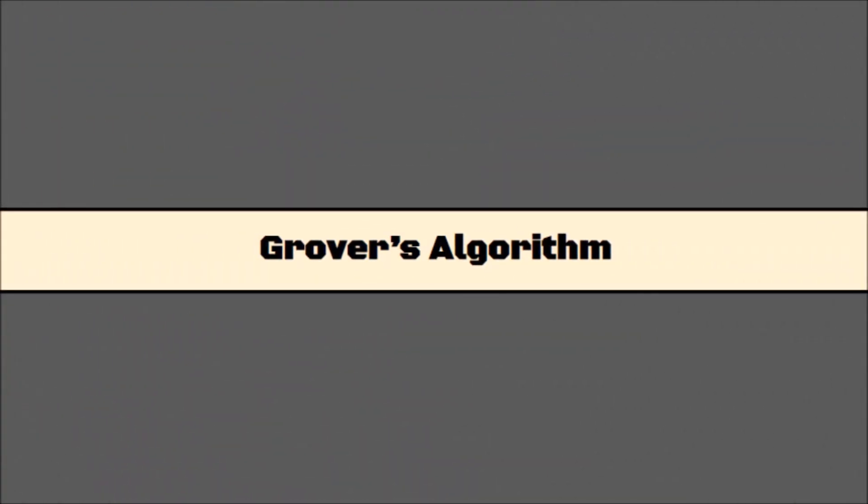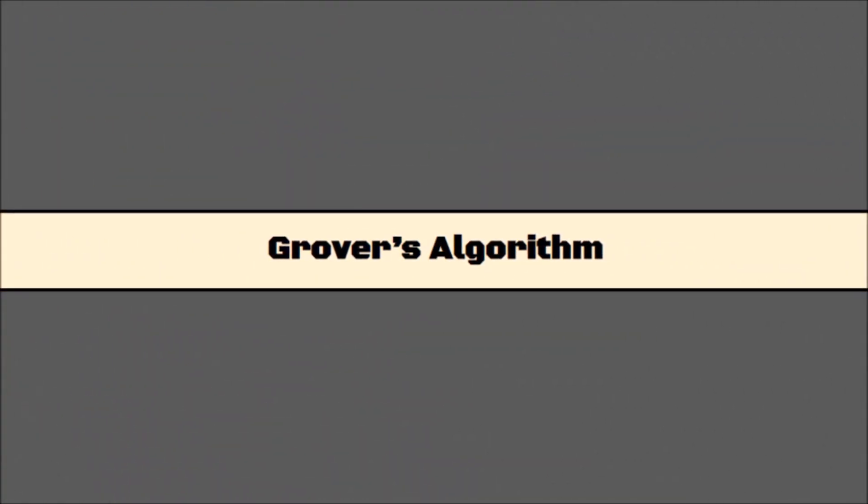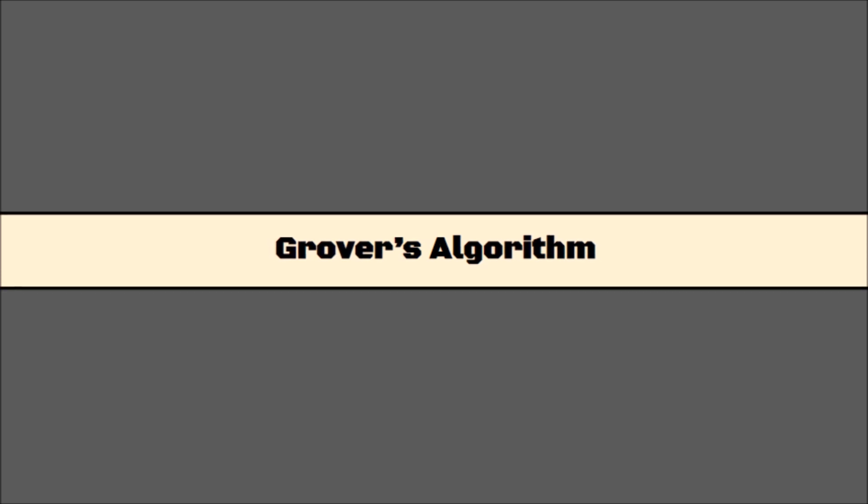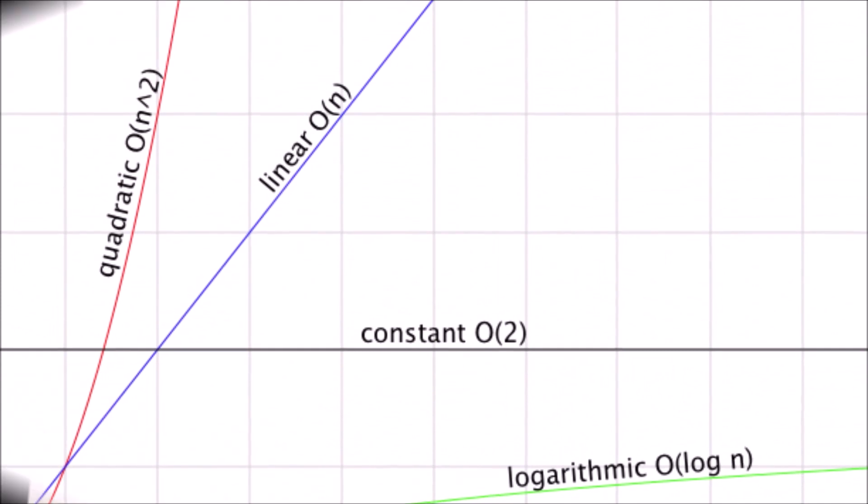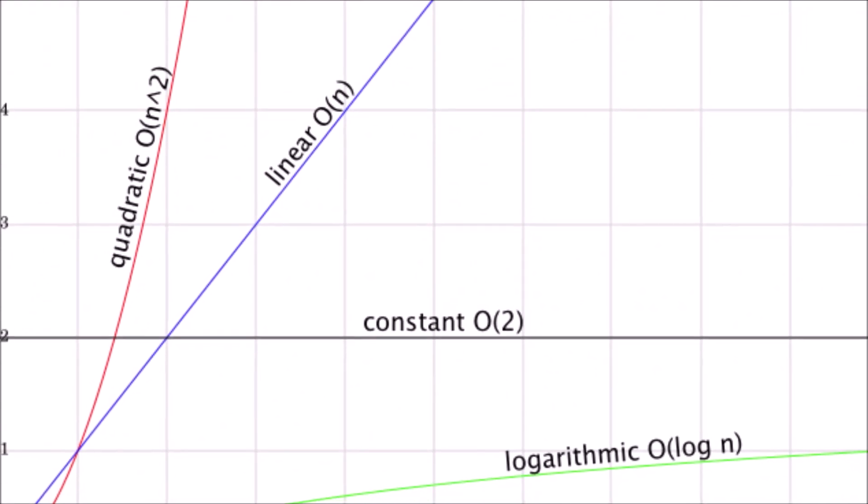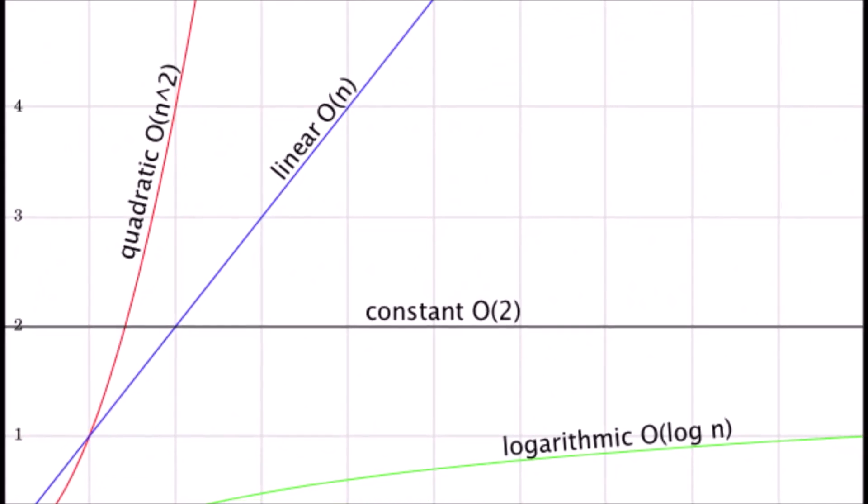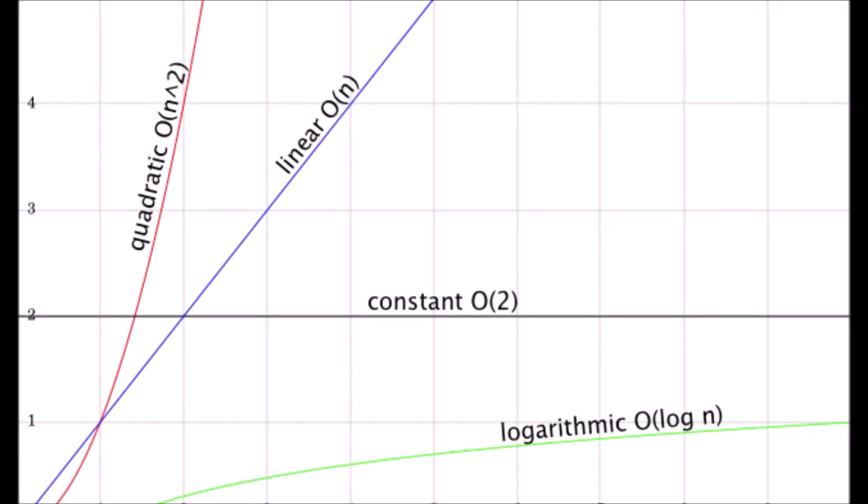In this video, I'm going to be focusing on Grover's algorithm, which was invented in 1996 by Lov Grover. It's a database search algorithm, and the speedup is quadratic. While it's not as dramatic as Shor's algorithm, it still has insane implications.